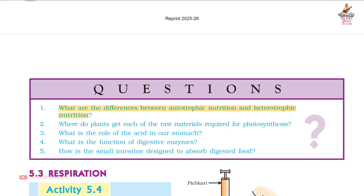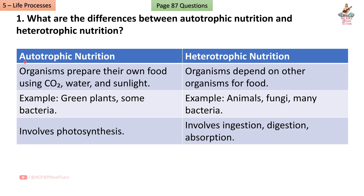Page 87, Question 1: What are the differences between autotrophic nutrition and heterotrophic nutrition? Answer: Autotrophic nutrition — organisms prepare their own food using CO2, water, and sunlight. Heterotrophic nutrition — organisms depend on other organisms for food.